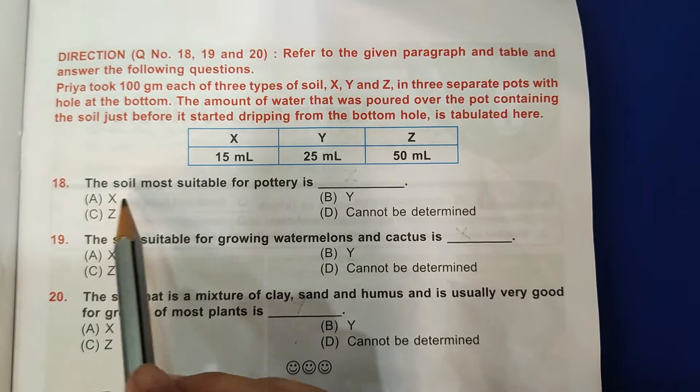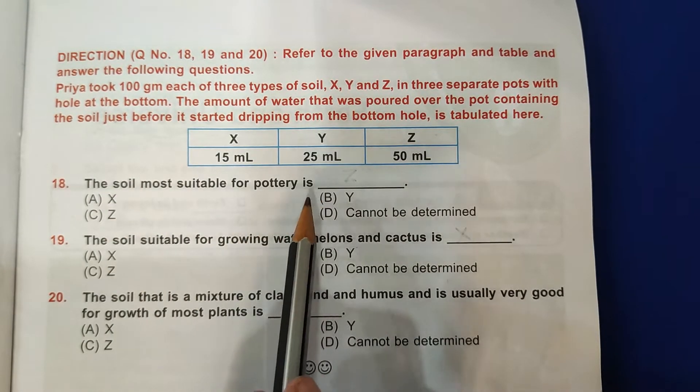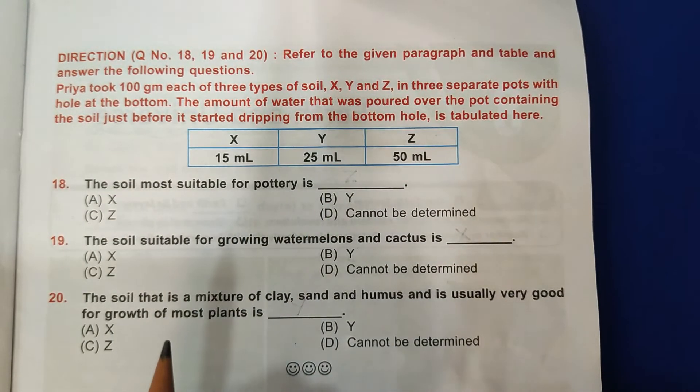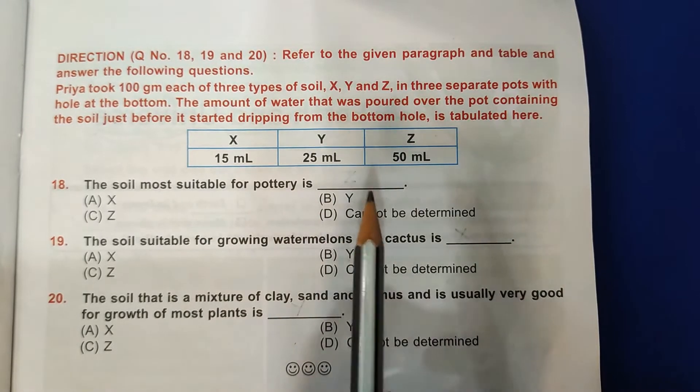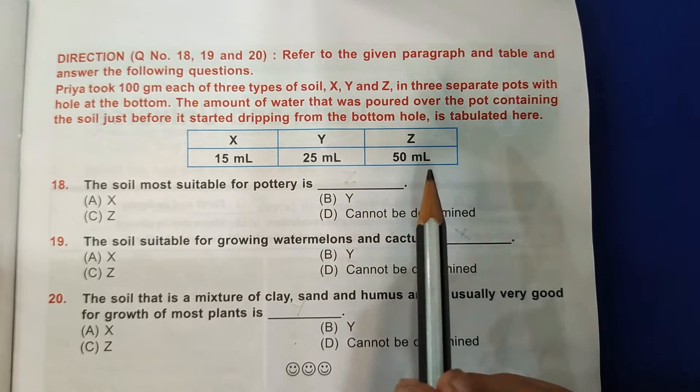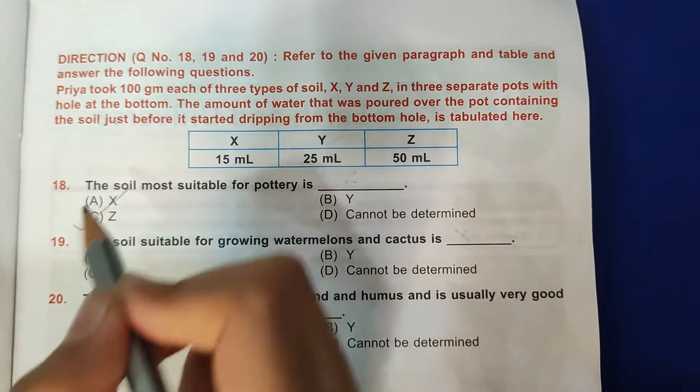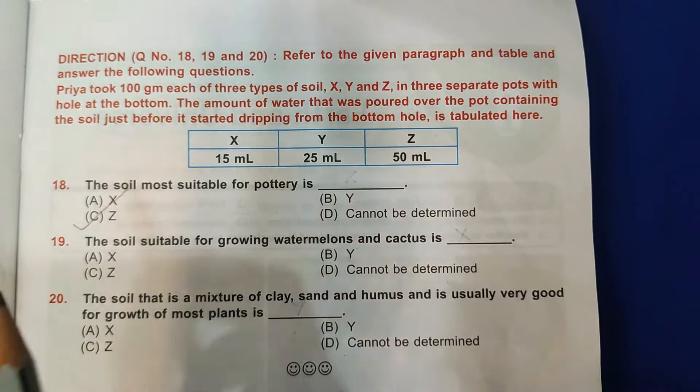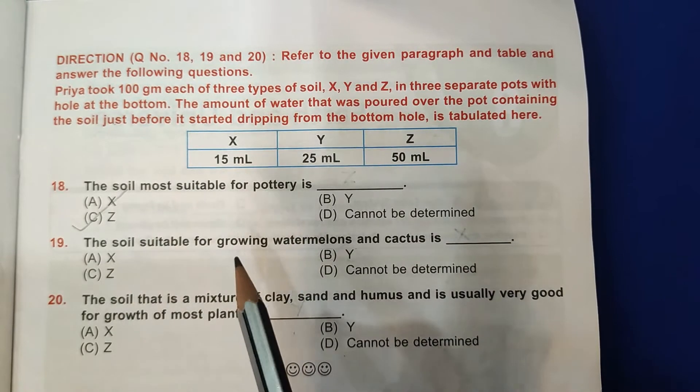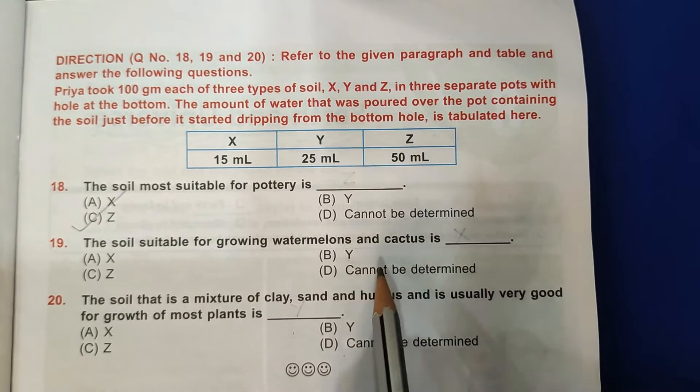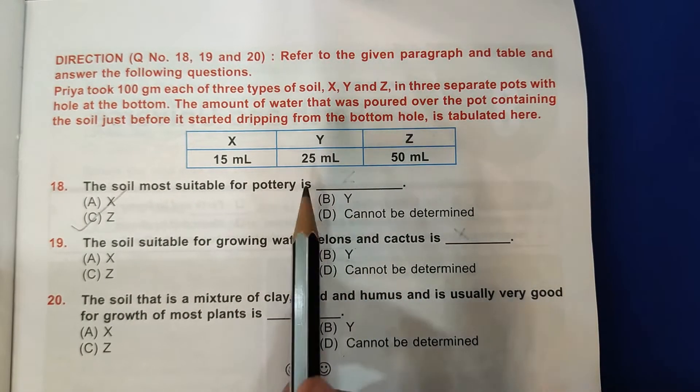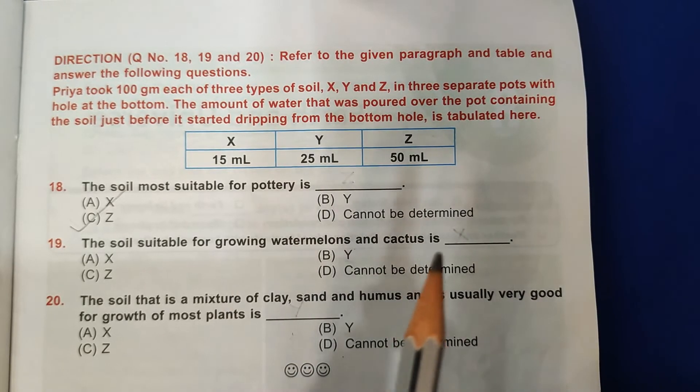18th question: The soil most suitable for pottery is clay soil, and clay soil holds a lot of water. Here Z is holding a lot of water, means Z is clay soil, means C is the correct answer. 19th question: The soil suitable for growing watermelons and cactus is soil X because it holds the least amount of water, so A is the correct answer.